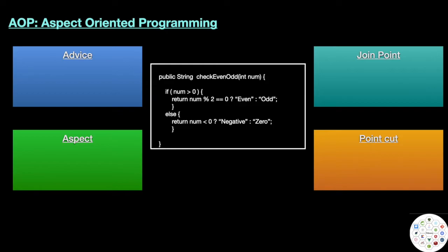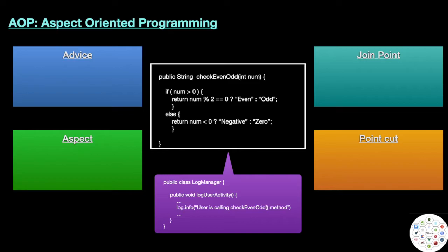We have one method called check even odd. It takes one integer parameter and returns a string: if the number is even it returns 'even', if odd it returns 'odd', if negative it returns 'negative', otherwise it returns '0'. Suppose we want to log this activity — that is, log that the check even odd method is going to execute. We have a class called LogManager with a method log user activity that logs this. What we want is: before check even odd is called, we want to execute log user activity.